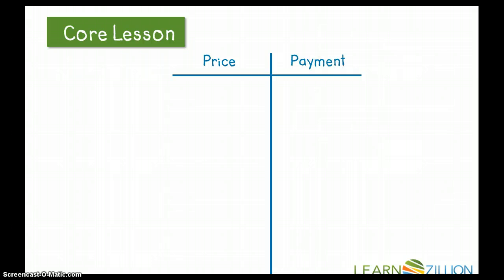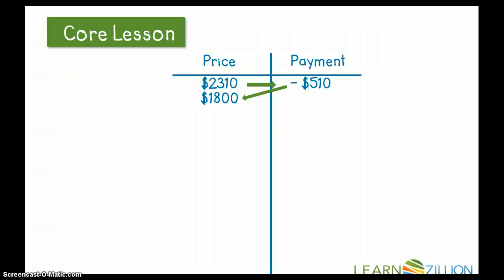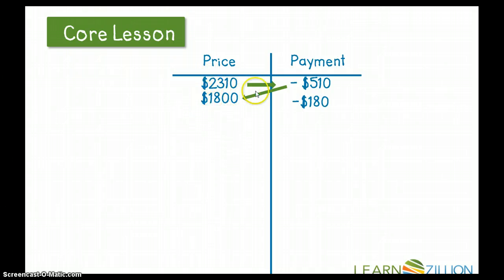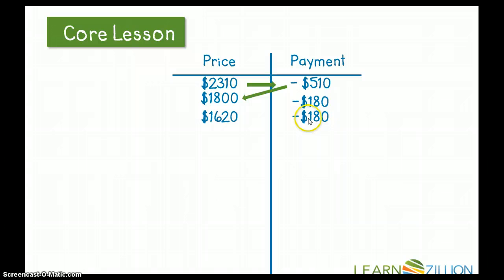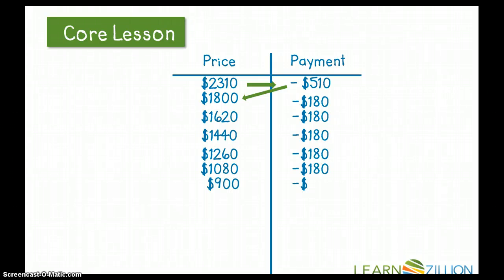I have two columns: the price and the payment. The TV costs $2,310 total and she is making a down payment of $510, so $2,310 minus $510 gives me $1,800. Now she wants to pay off this price in equal monthly payments of $180. I take my total and subtract $180, and I'm left with $1,620. I take that amount and subtract another $180, and I'm left with $1,440. I keep doing this until I'm left with zero dollars.